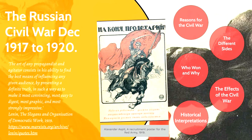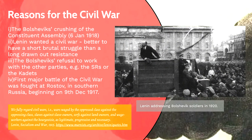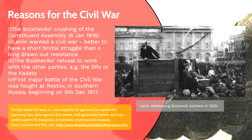Let's begin with reasons for the Civil War. We looked at this in our last video — the dissolution of the Constituent Assembly. One cause of the Civil War was the crushing of the Constituent Assembly on the 6th of January 1918 by the Bolsheviks. The party that held the most seats was the Socialist Revolutionaries, whose leader Viktor Chernov was the chairman. They weren't happy about having their Assembly dissolved, so they were one of the groups that fought against the Bolsheviks during the Civil War.